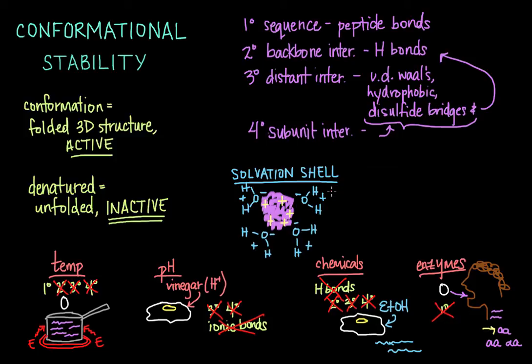So what did we learn? We learned that conformational stability refers to all the forces that keep a protein properly folded in its active form. This includes all the different levels of protein structure as well as the solvation shell. We also learned that a protein can be denatured into its inactive form by changing a variety of factors in its environment, including changing the temperature, the pH, or adding chemicals or enzymes.